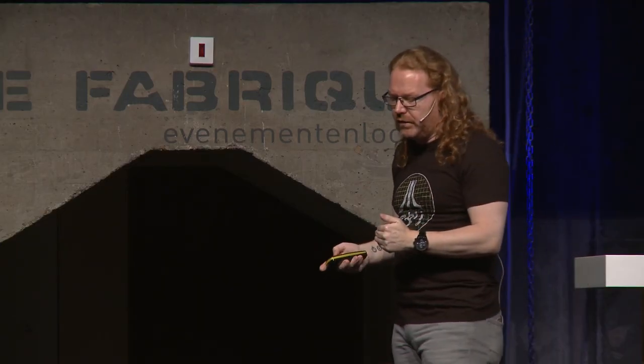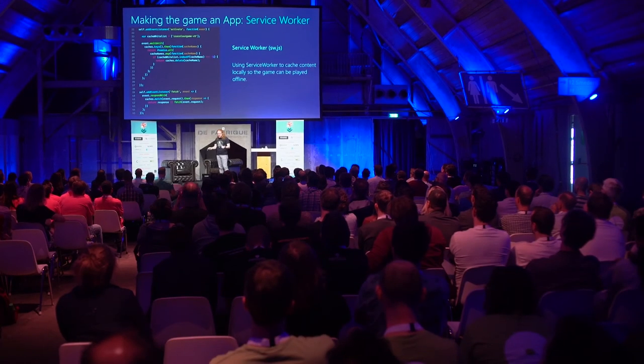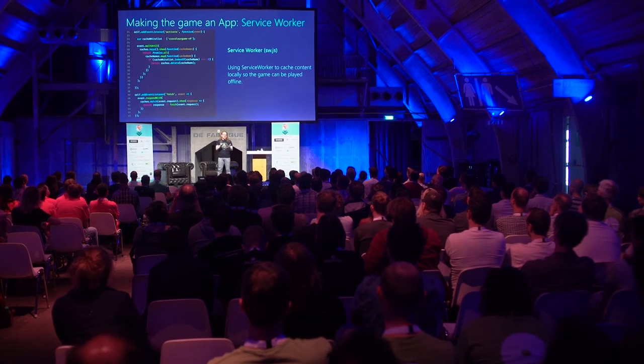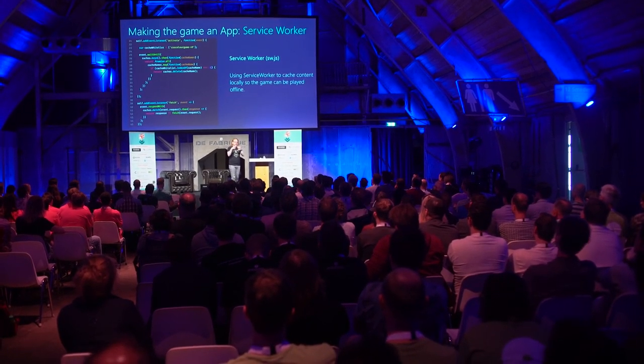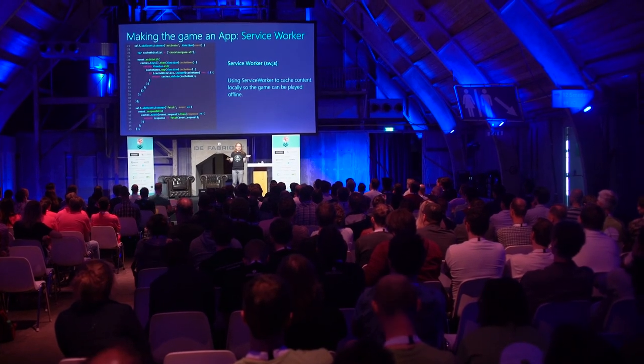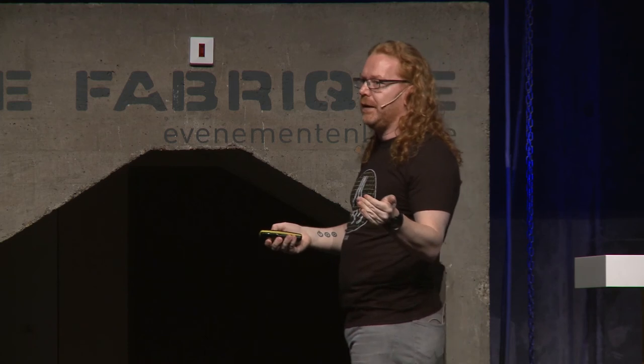So this is the full code for the service worker, and now my application works offline, is installable, becomes an icon on the desktop, and when people click it, it's full screen — and they don't even know it started as just 10k of JavaScript. This can be done for all your applications: for environments that support it, cache things by name rather than doing it yourself in databases.